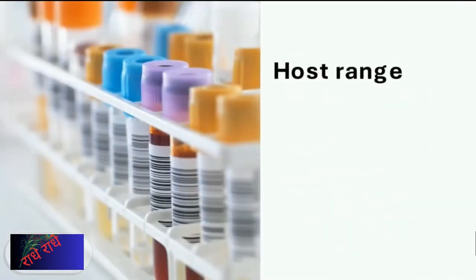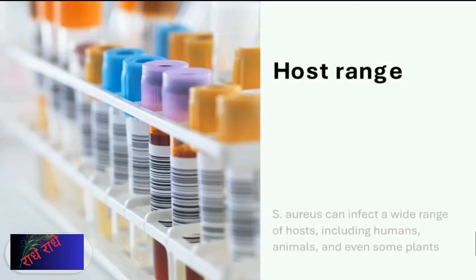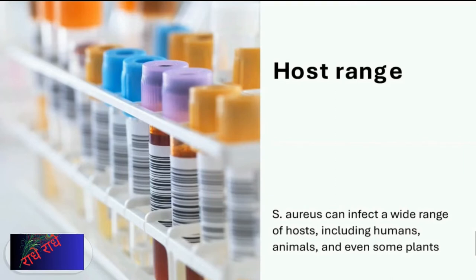Staphylococcus aureus is a widespread bacteria known to infect humans, animals, and even some plants. Though it has the potential of causing serious illness, it is possible for it to be asymptomatic, making it tricky to control its spread.